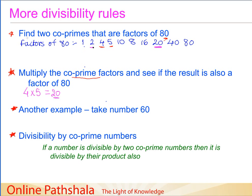Let us take one more set: we can take 2 and 5. These are again co-prime — the only common factor between them is 1. We multiply 2 by 5 and get 10, and 10 is also a factor of 80.